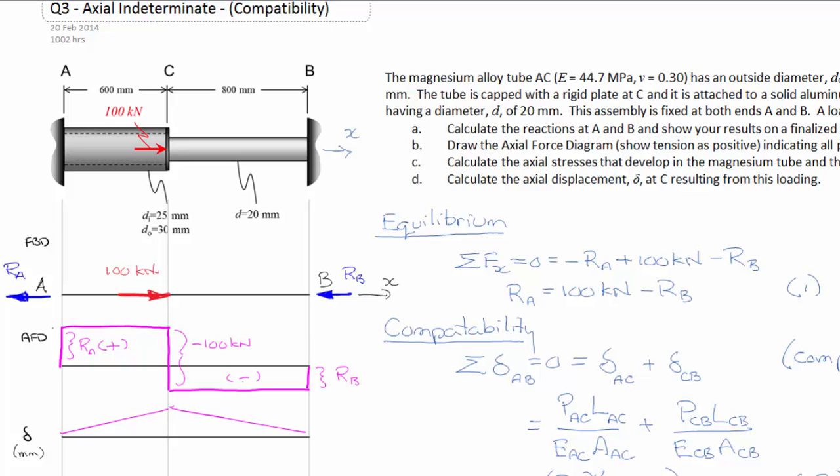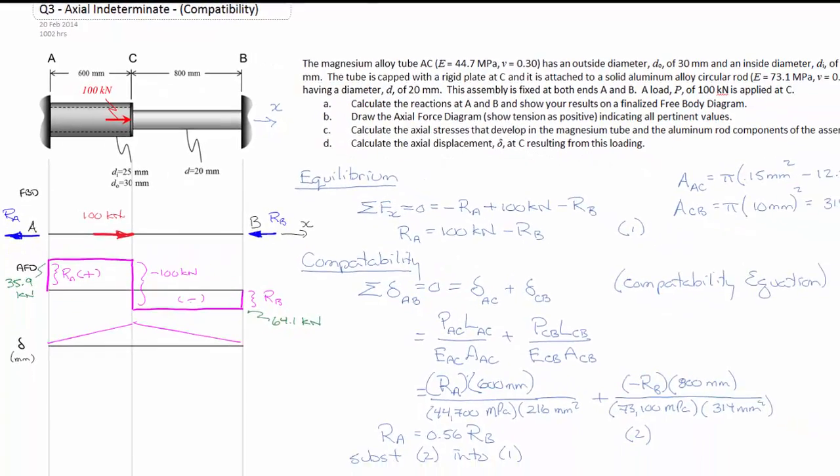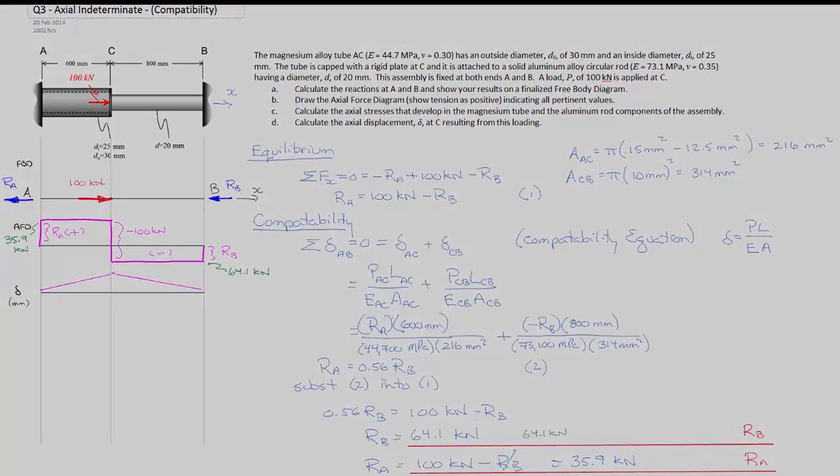RA is 35.9 kilonewtons at that point, and this value 64.1 kilonewtons. You can see when I drew the diagram, the ratios aren't quite right. Remember, it was a qualitative drawing of it. Clearly the force is larger between C and B than between A and C. It doesn't really matter, I could redraw it if I really wanted the fidelity to be correct.